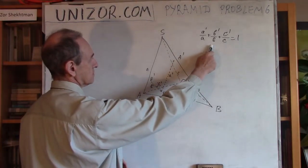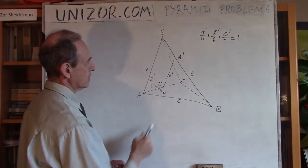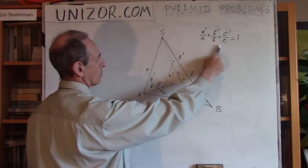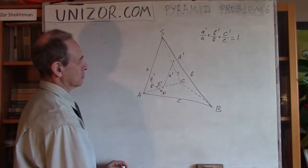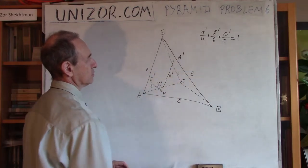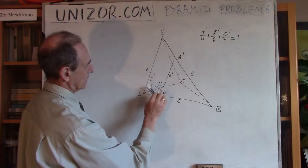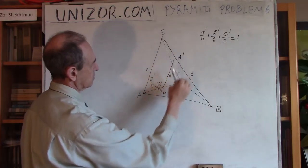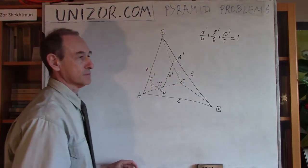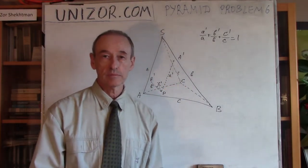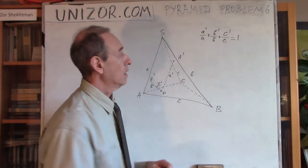I have to prove this: the length of these three segments are related to corresponding lines from which they are parallel to, and the sum is equal to 1. So, a prime divided by a plus b prime divided by b plus c prime divided by c should be equal to 1. That's an interesting property, because apparently it doesn't depend on the point P.